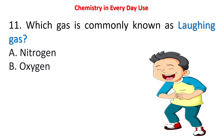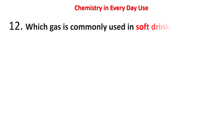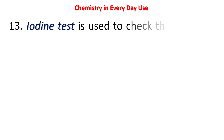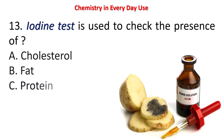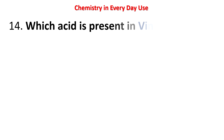Next question: which gas is commonly known as laughing gas? Options: nitrogen, oxygen, nitrous oxide, carbon dioxide. The answer is nitrous oxide, N2O. Next question: which gas is commonly used in soft drinks? Options: oxygen, nitrogen, carbon dioxide, hydrogen. The answer is carbon dioxide. Next question: iodine test is used to check the presence of — cholesterol, fat, protein, or carbohydrates? The answer is carbohydrates.